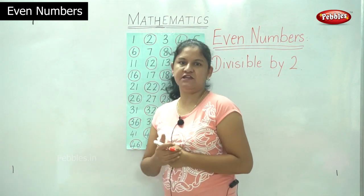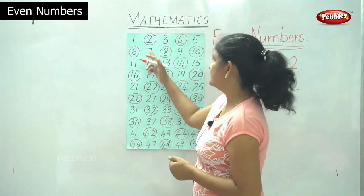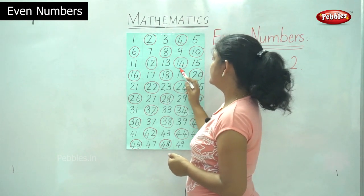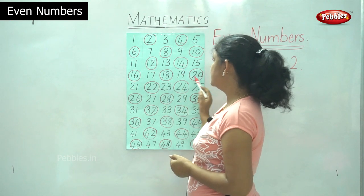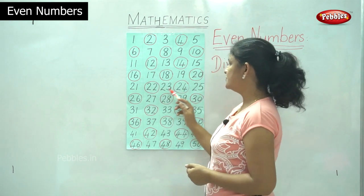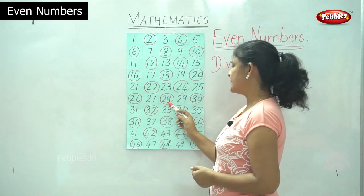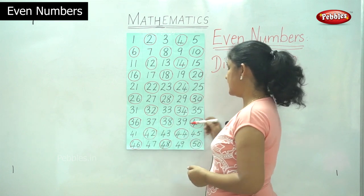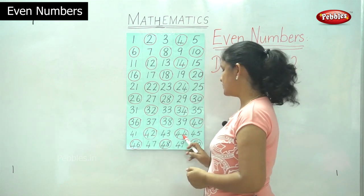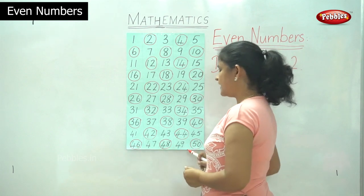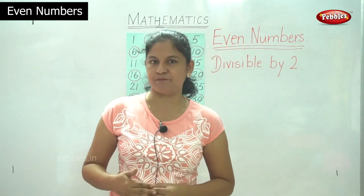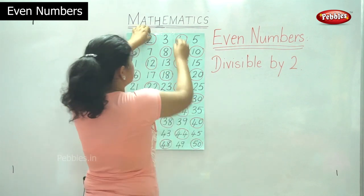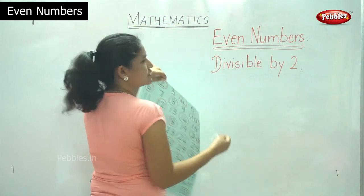Numbers that can be grouped equally and are divisible by 2. So we have: 2, 4, 6, 8, 10, 12, 14, 16, 18, 20, 22, 24, 26, 28, 30, 32, 34, 36, 38, 40, 42, 44, 46, 48, and 50. So we have seen the even numbers from 1 to 50. Now we will move on to the even numbers from 51 to 100.